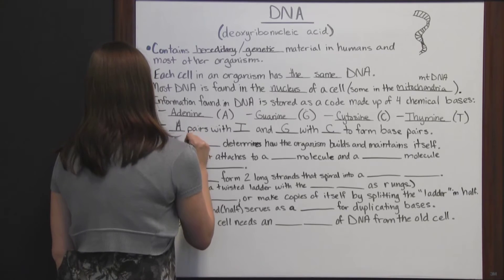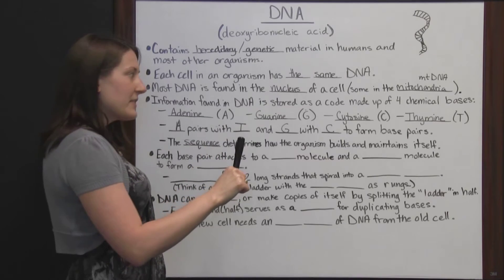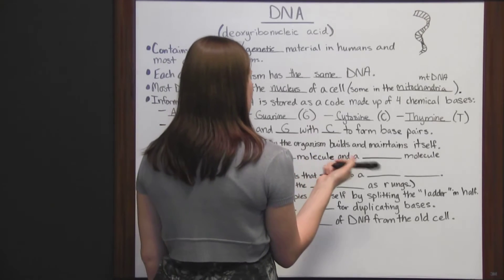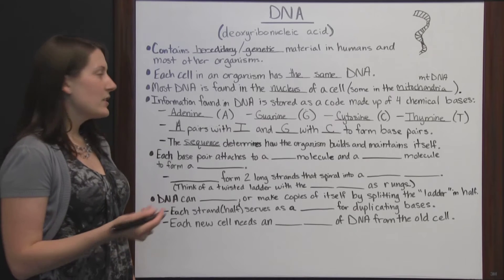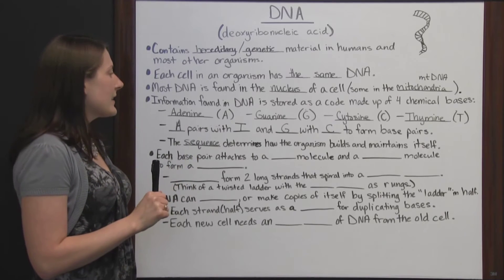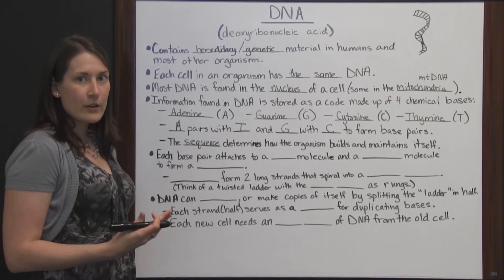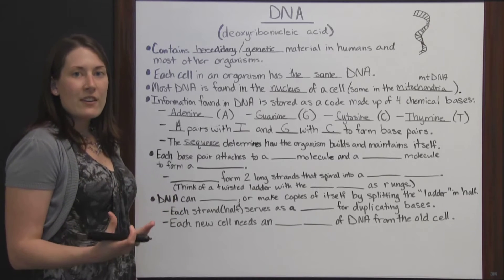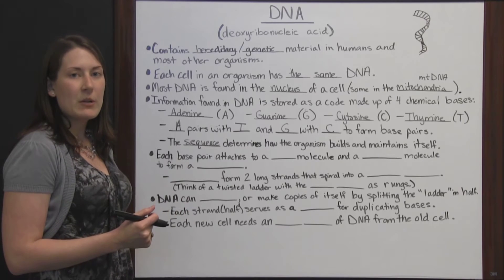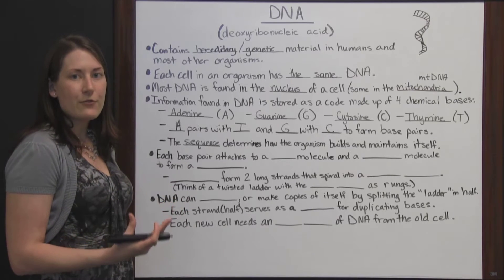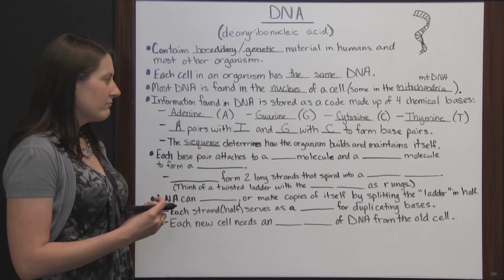The sequence of adenine, thymine, guanine, and cytosine pairs determines how the organism builds and maintains itself. Not every organism or person is going to have the exact same sequence of base pairs. Think of the alphabet — we use 26 letters to form all of our words and sentences, but the way they're arranged, the sequence of those letters, is what lets us know what word or sentence is being communicated. Each word has a different meaning even though it's made up of the same 26 letters or some subset of those letters.